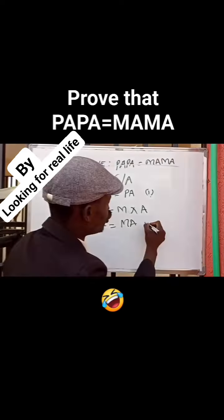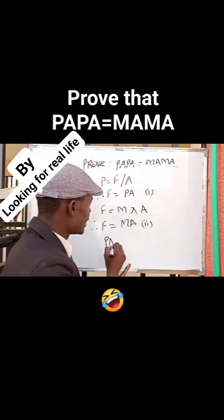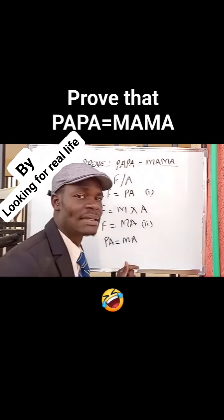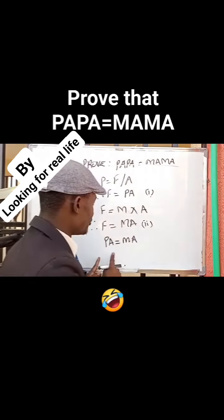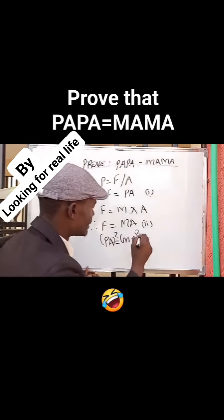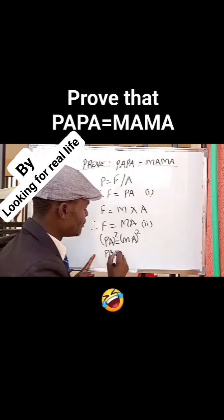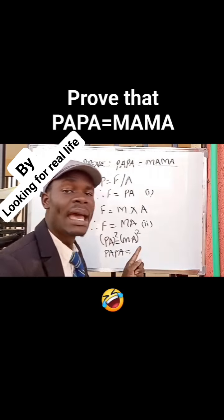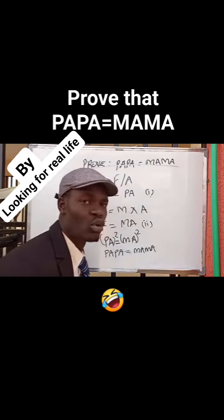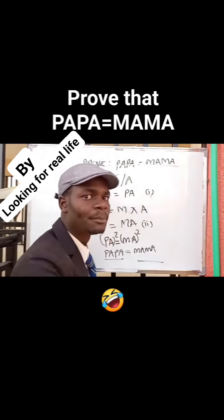From the first equation and the second equation, PA is equal to MA. At this point, we square both sides. PA squared is equal to papa, and MA squared is equal to mama. Therefore, papa is equal to mama.